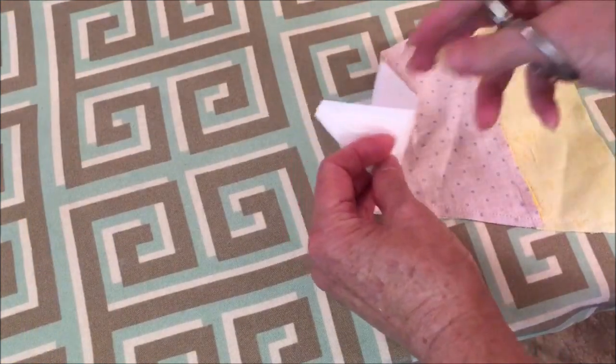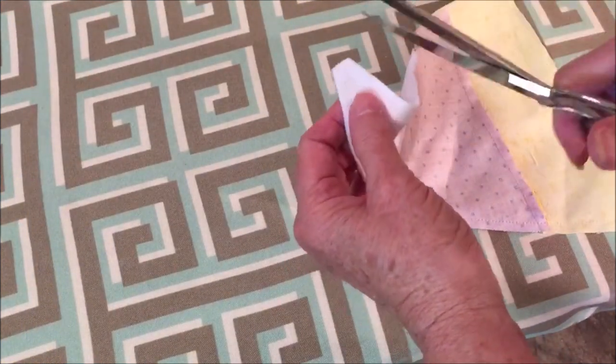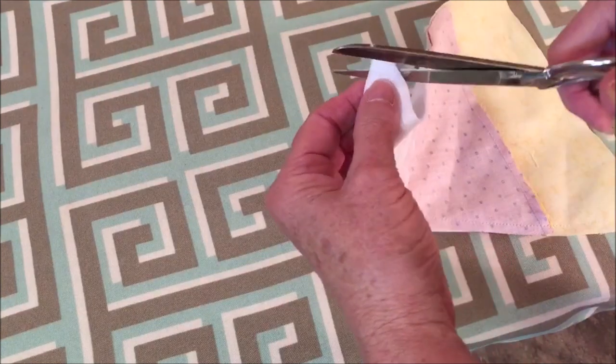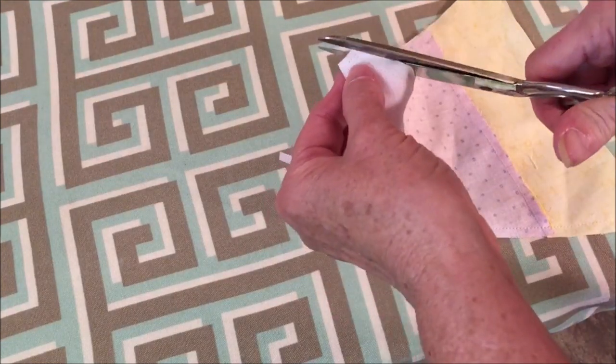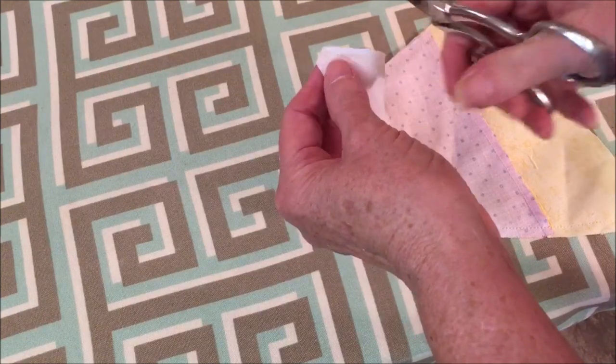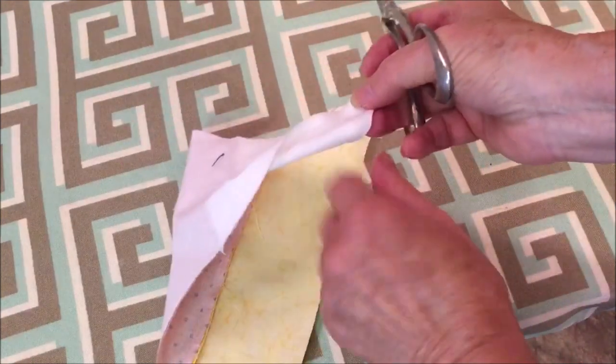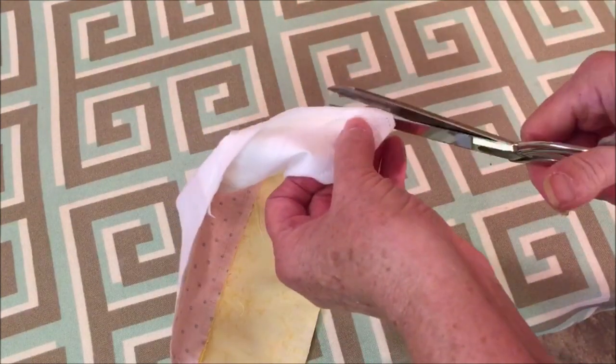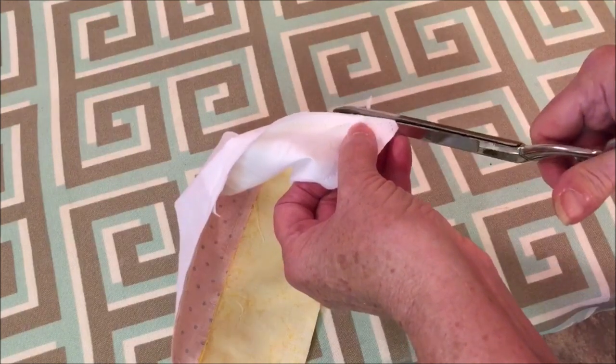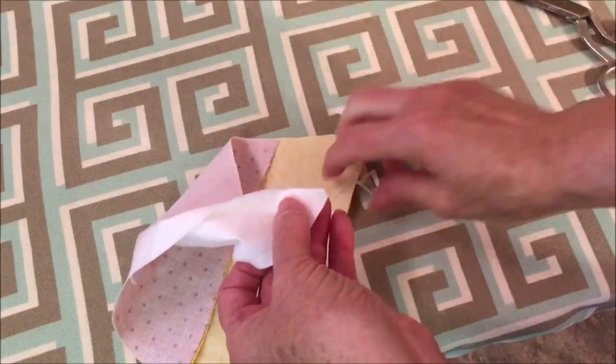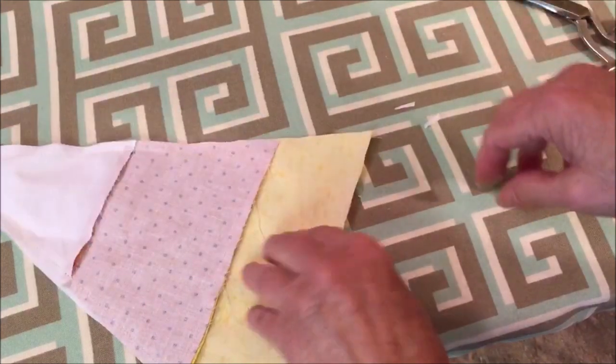Before we turn this right side out, we want to do a little trimming. So I'm going to trim away some of the bottom. And then on an angle. But please make sure that you do not trim into the stitches.